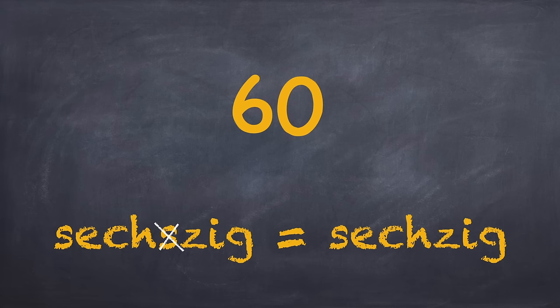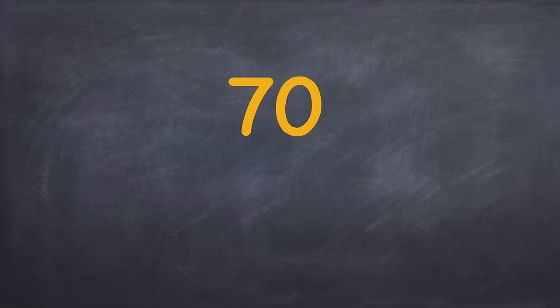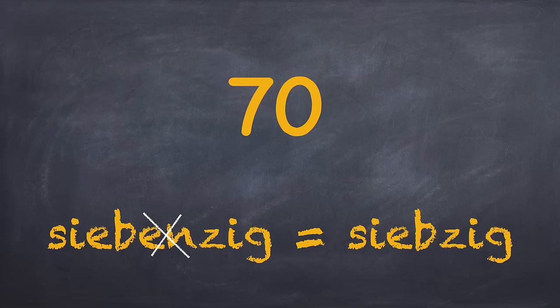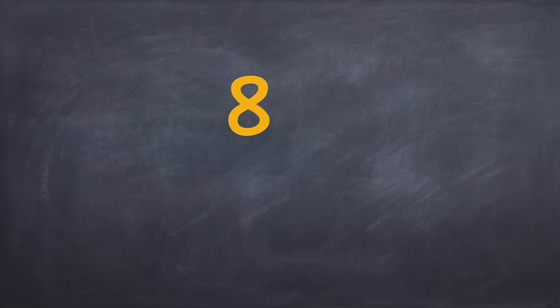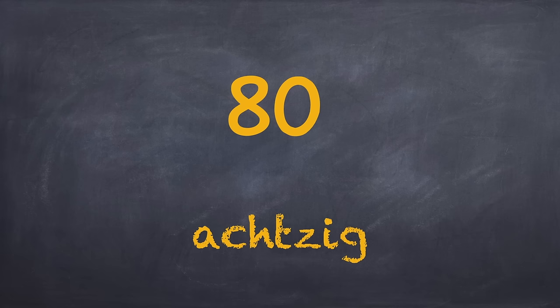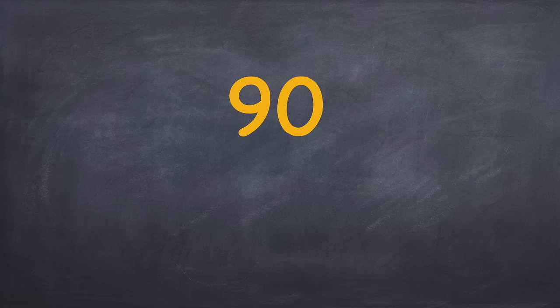Sechzig. Now here's again an exception — the S from sechs goes away. Siebzig. Here also the EN from sieben goes away. Achtzig. Neunzig.